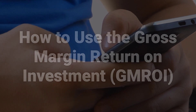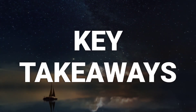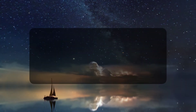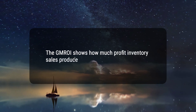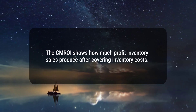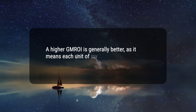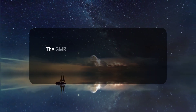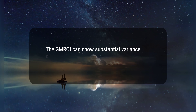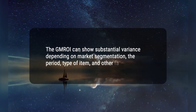Company ABC may be a more ideal investment based on the GMROI. Here are three key takeaways: 1. The GMROI shows how much profit inventory sales produce after covering inventory costs. 2. A higher GMROI is generally better, as it means each unit of inventory is generating a higher profit. 3. The GMROI can show substantial variance depending on market segmentation, the period, type of item, and other factors.